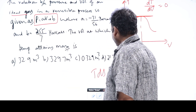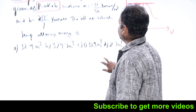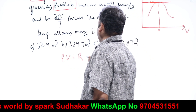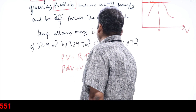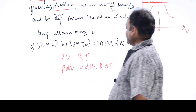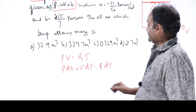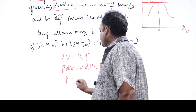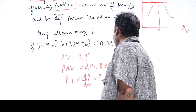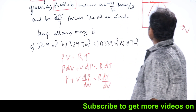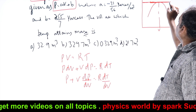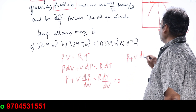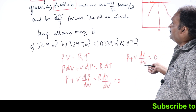The ideal gas equation is PV = RT. Differentiating: P·dV + V·dP = R·dT. Dividing throughout by dV gives: P + V·(dP/dV) = R·(dT/dV). At the peak point where temperature is maximum, dT/dV = 0, so R·(dT/dV) = 0, meaning P + V·(dP/dV) must equal zero.